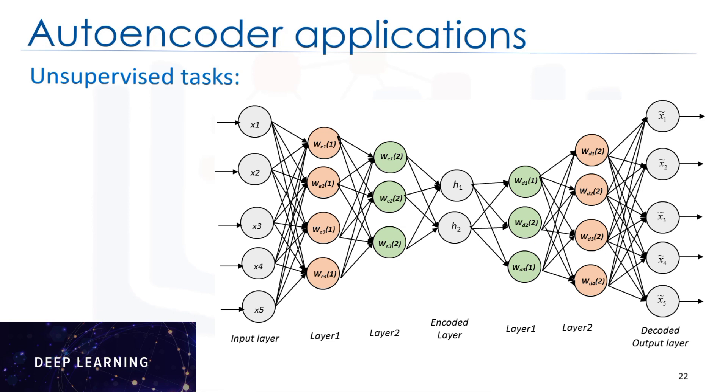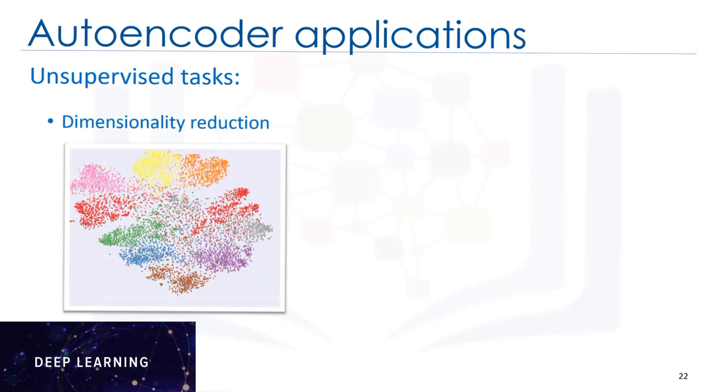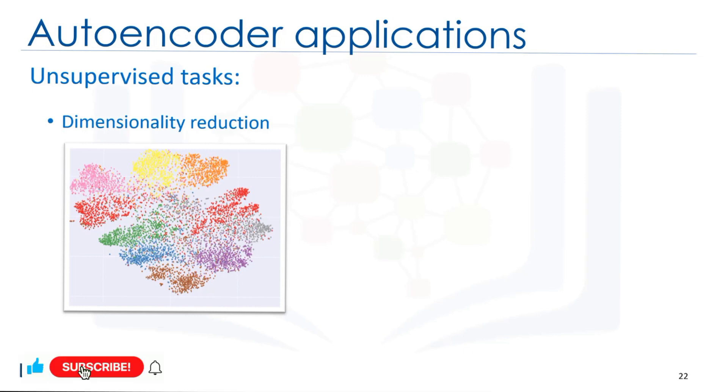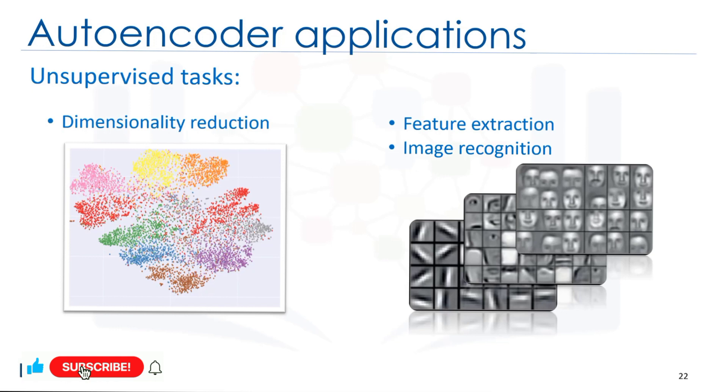As the encoder part of the network, autoencoders compress data from the input layer into a short code, a method that can be used for dimensionality reduction tasks. Also, in stacking multiple autoencoder layers, the network learns multiple levels of representation at different levels of abstraction. For example, to detect a face in an image, the network encodes the primitive features, like the edges of a face. Then, the first layer's output goes to the second autoencoder to encode the less local features, like the nose, and so on. Therefore, it can be used for feature extraction and image recognition.